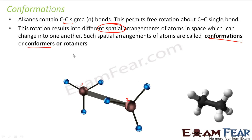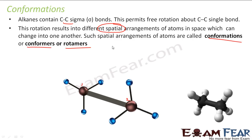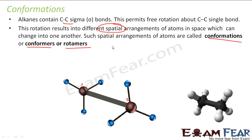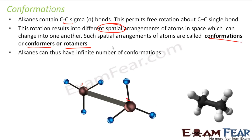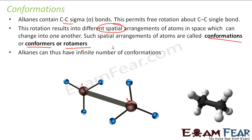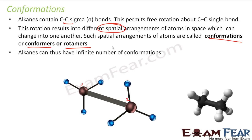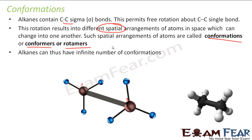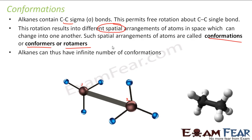These spatial arrangements are also called conformers or rotamers. Alkanes have an infinite number of conformations because the degree of rotation can differ by, say, 0.1 or 0.2 degrees — so depending on precision, there can be infinite conformations. Since we can't study all of them, we will study at least the extreme cases.